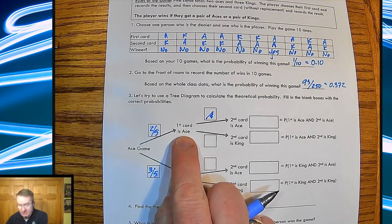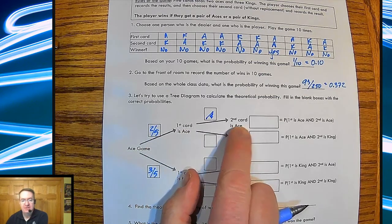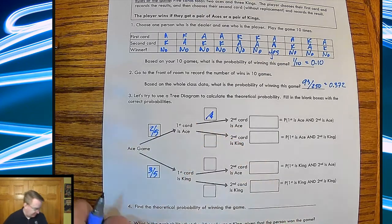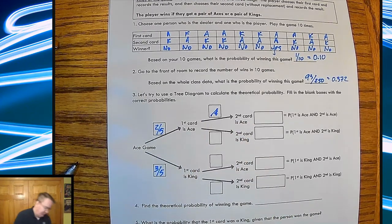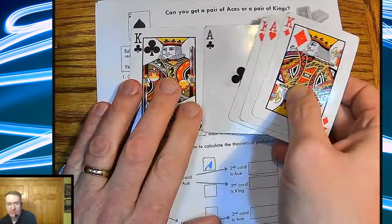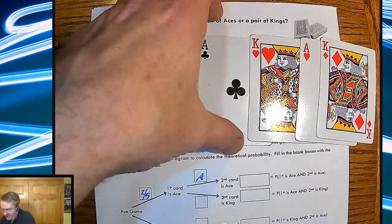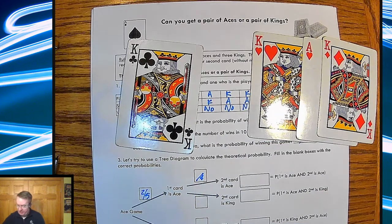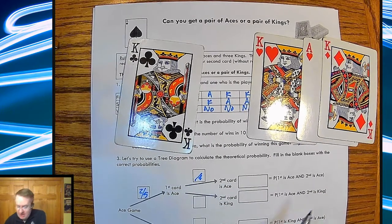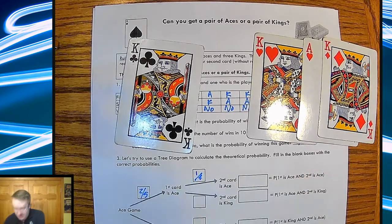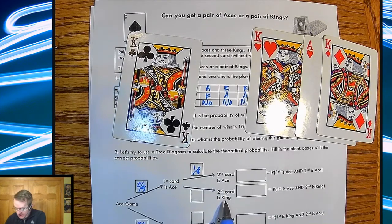So if I get the first card is an ace, what's the probability the second card is an ace? Now one of the aces is already off the table. In fact, so here are my cards. So if I have the first card is an ace, that's off the table. So now what's the probability that the second card is going to be an ace? That's going to be one out of four. The probability that the second card is a king: one, two, three, three out of four.